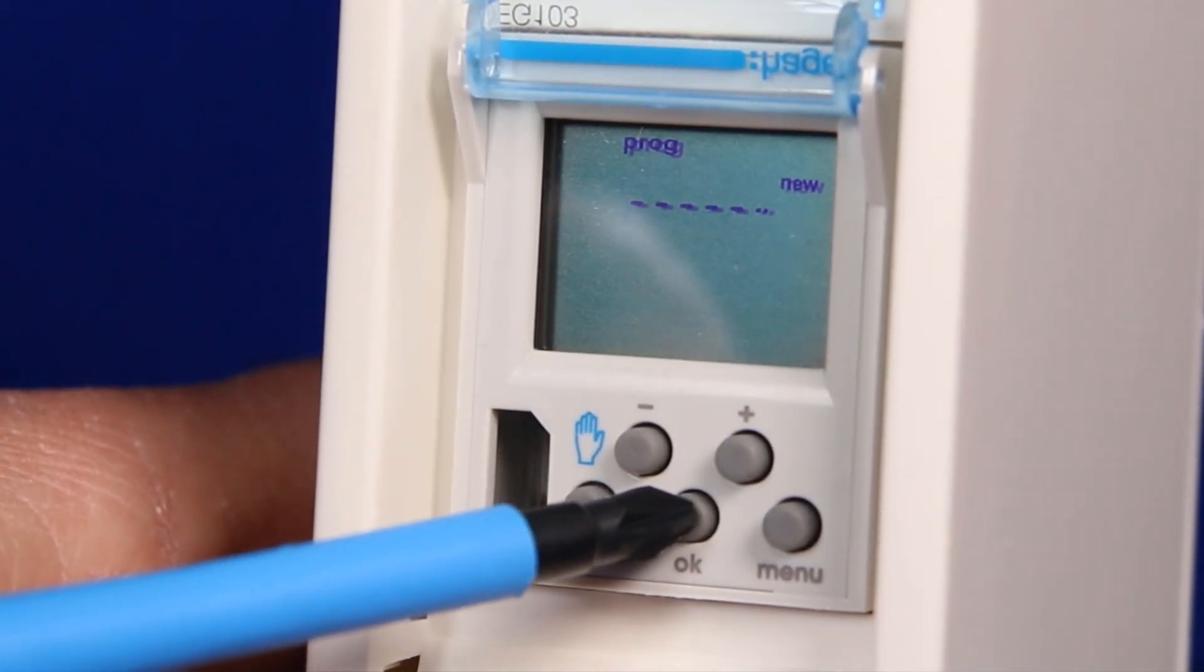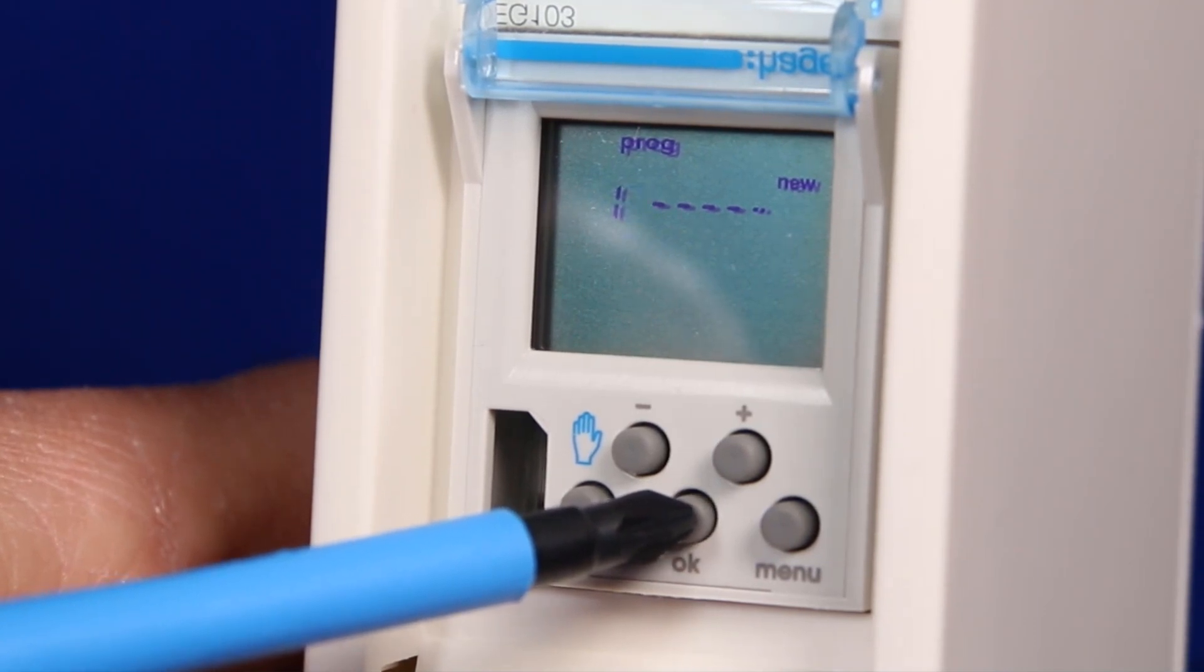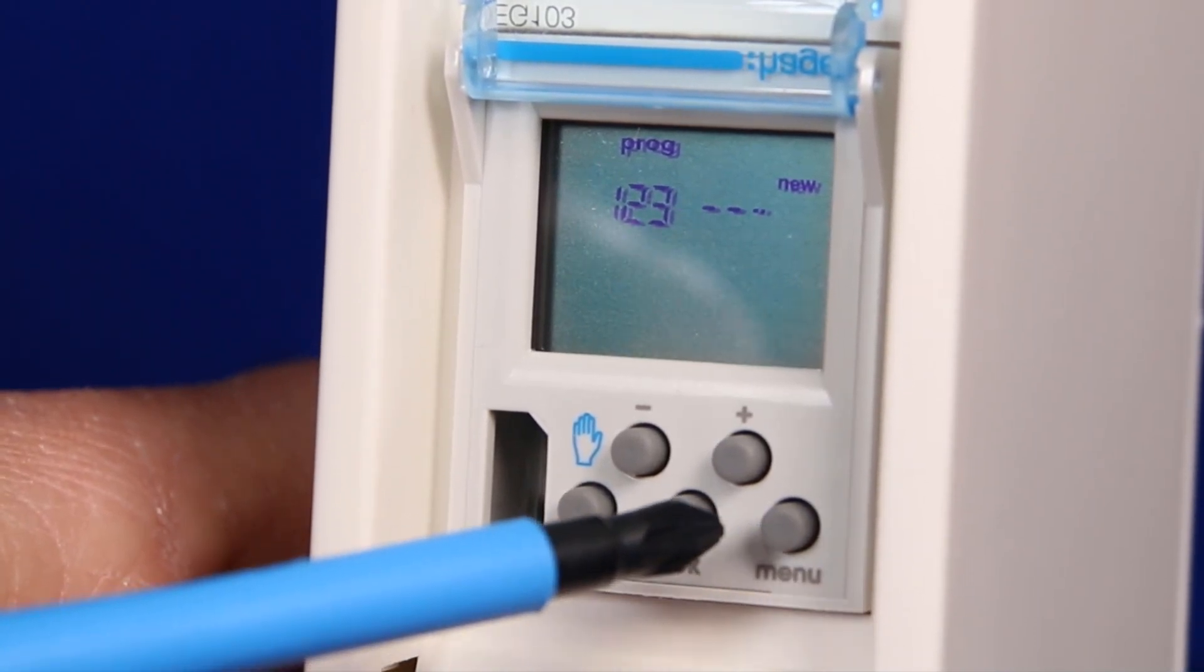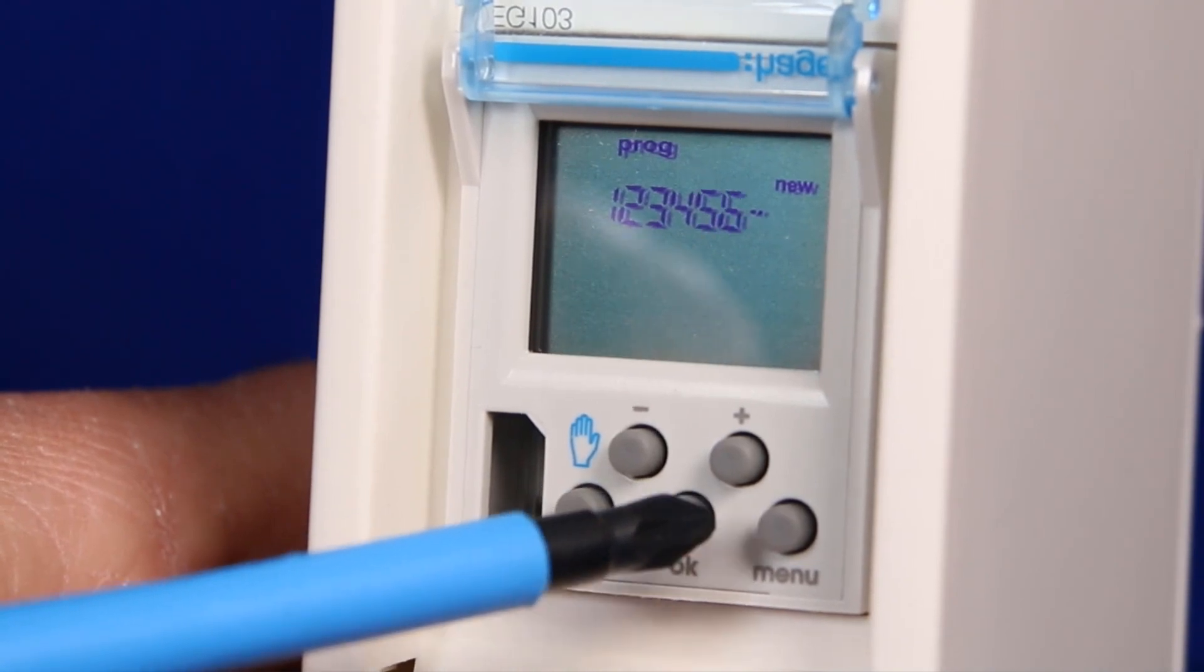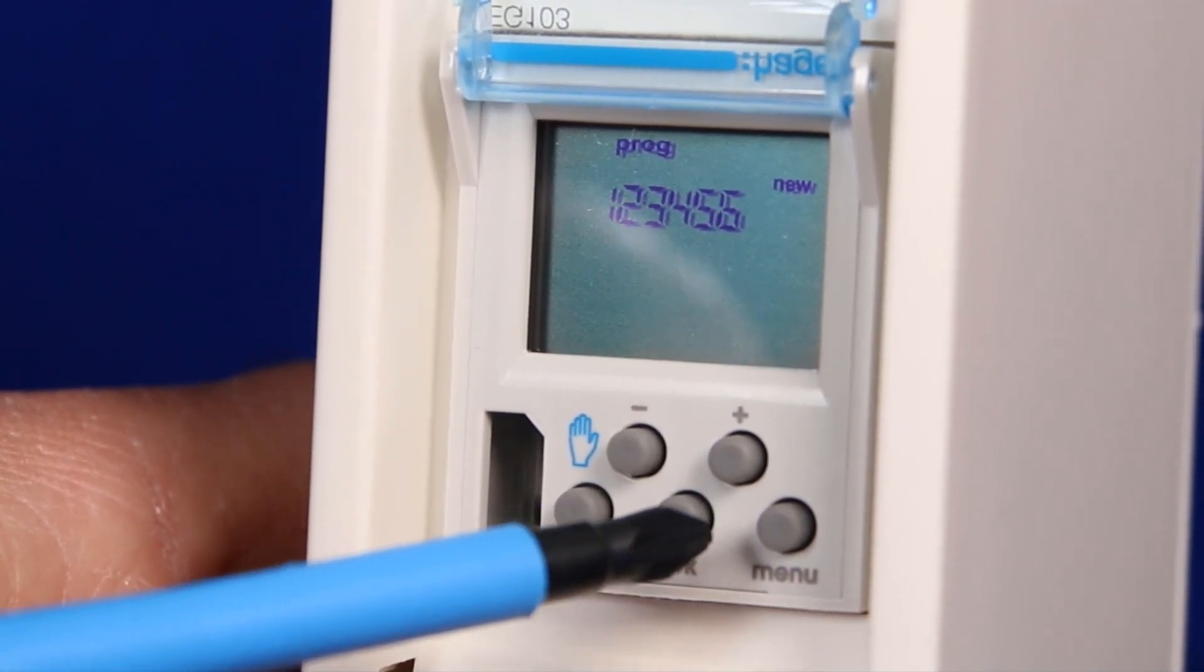Day one is flashing. If we press ok day one stops flashing and day two starts flashing and so on until all seven days are not flashing, indicating we are programming all seven days.